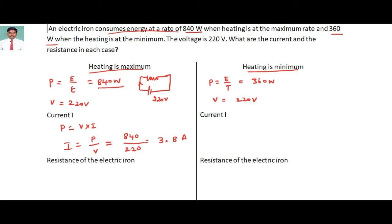When the heating is minimum, the power is 360 watts. Using the same formula, I equals P divided by V, so I equals 360 divided by 220, which gives 1.63 amperes. So the current in the first case is 3.8 amperes and in the second case is 1.63 amperes.